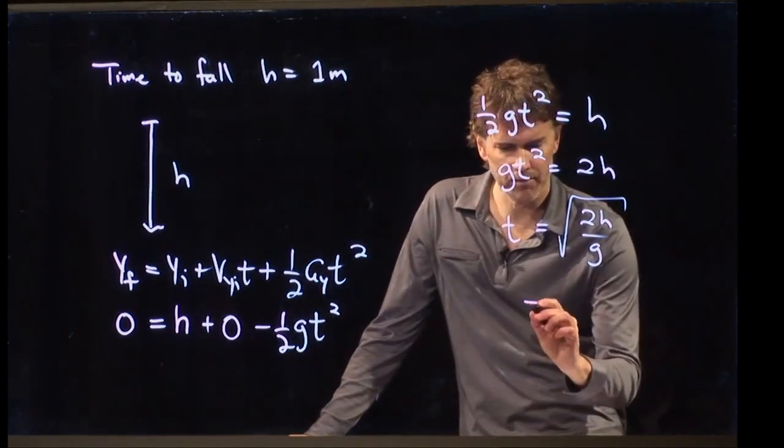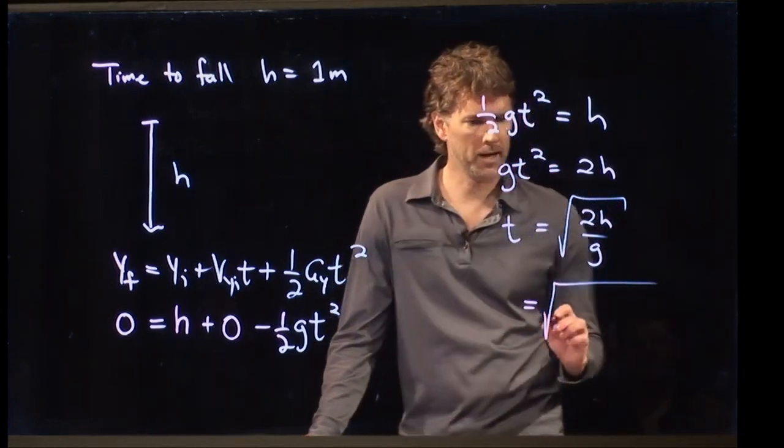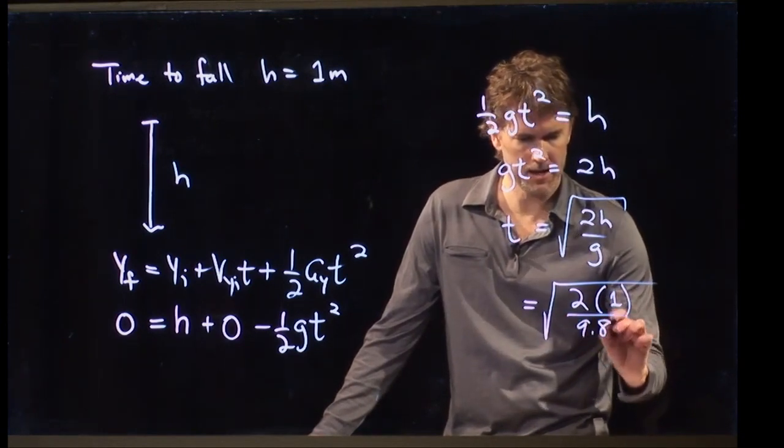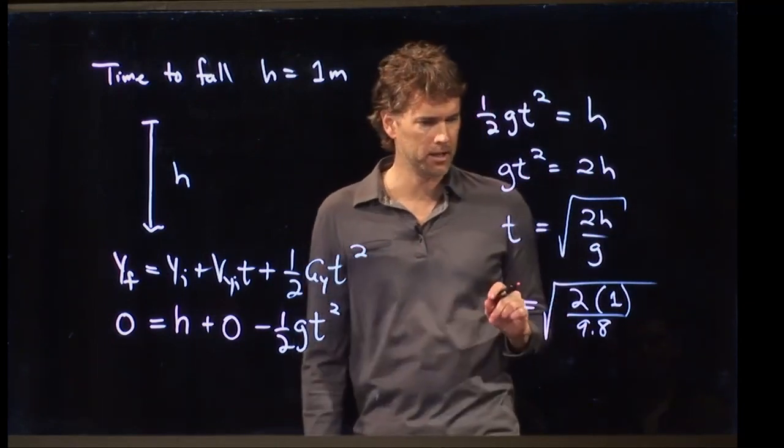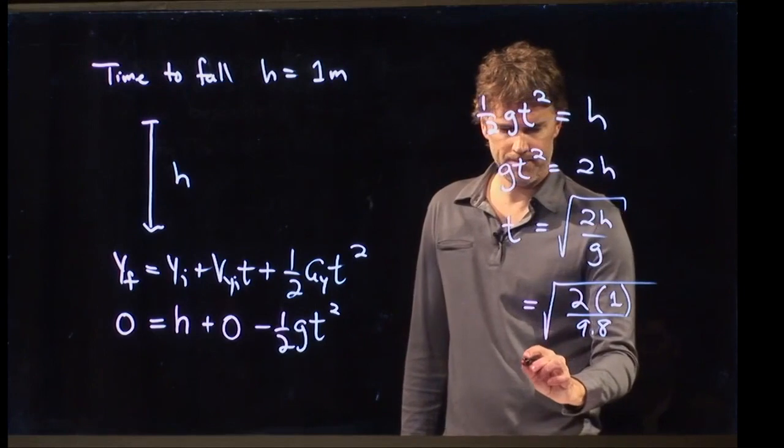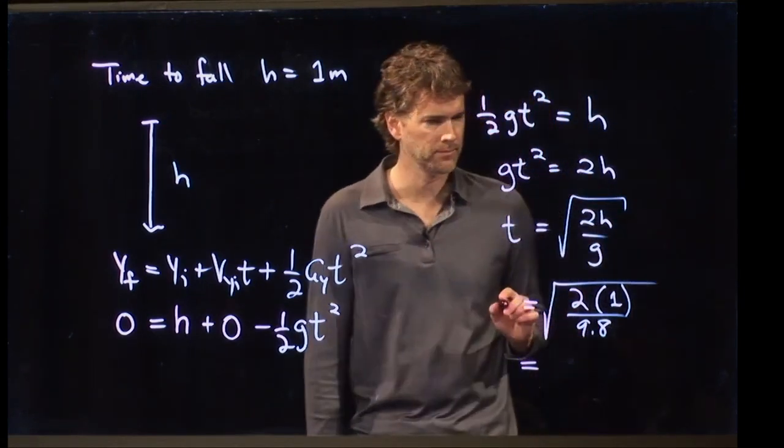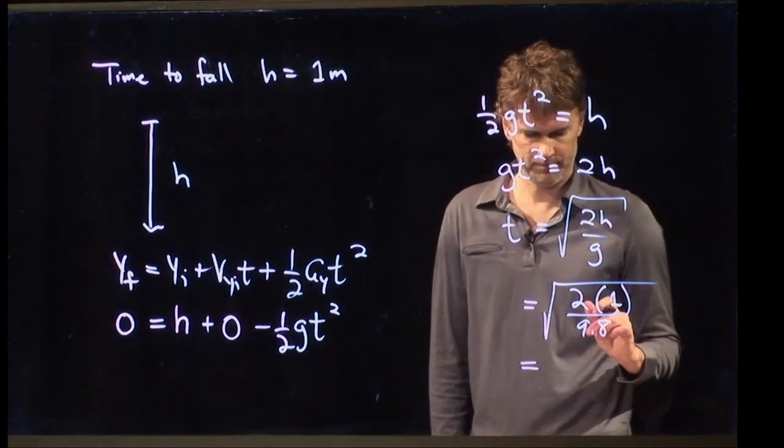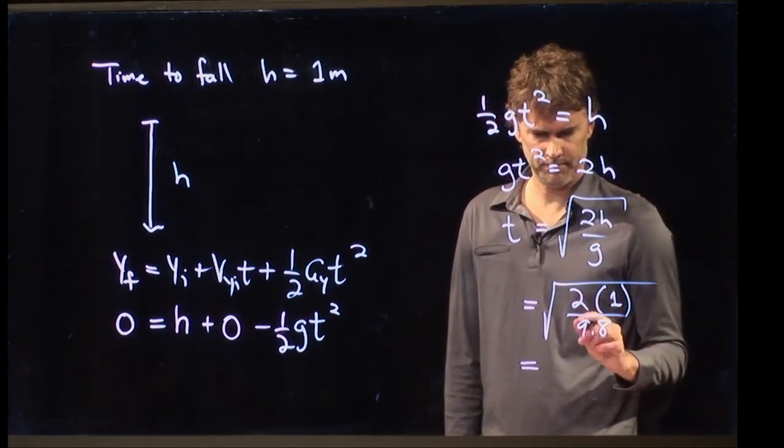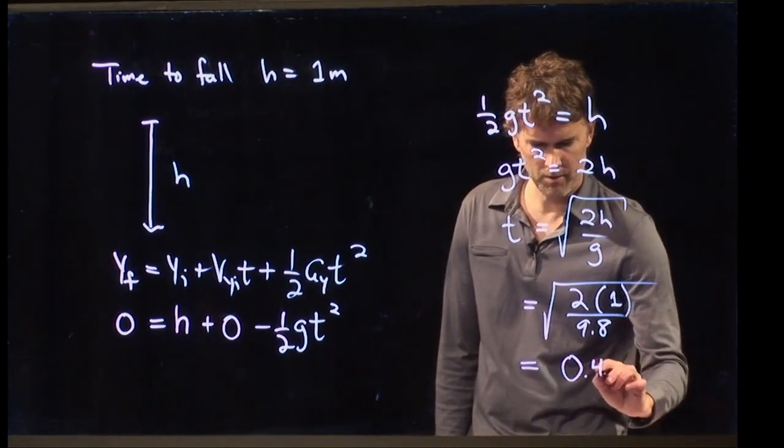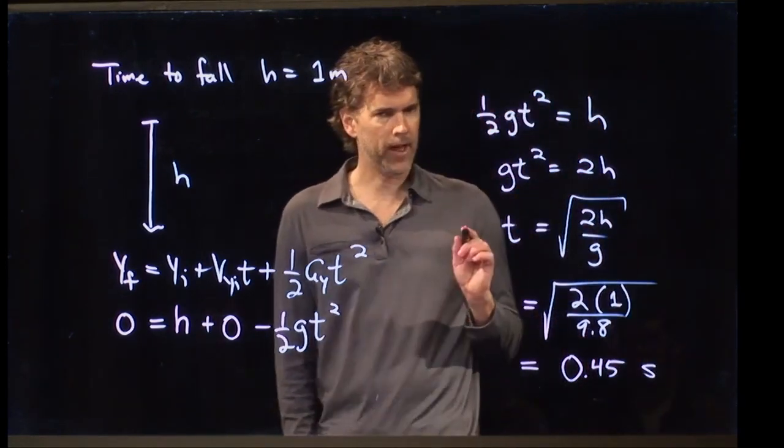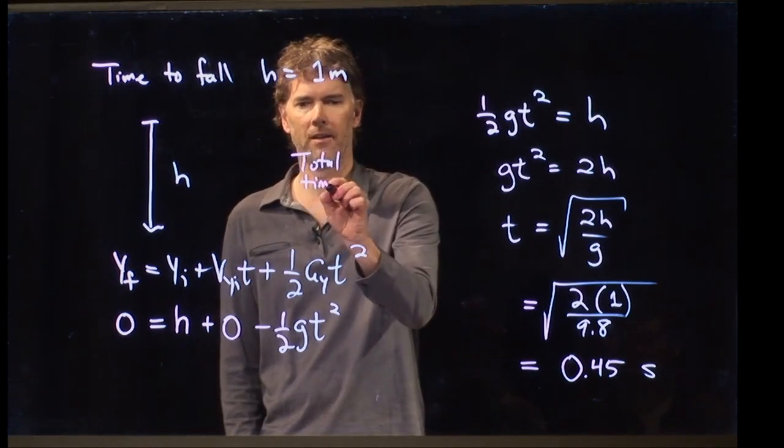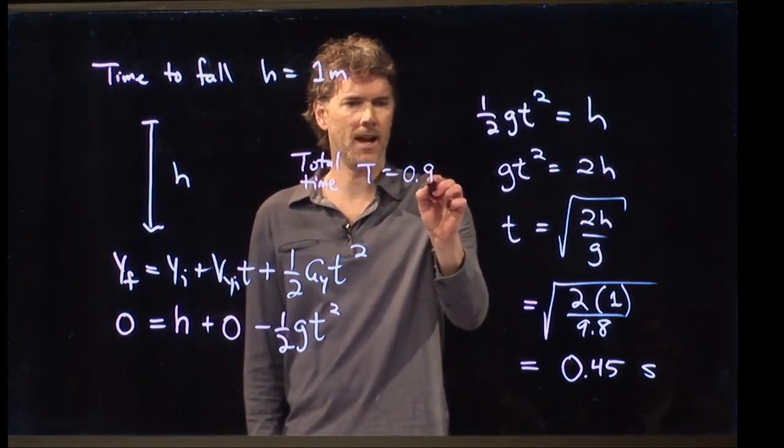So, we can plug in these numbers. If we do that, what do we get? We get 2 times 1 meter divided by 9.8. Somebody punch into your calculator those numbers and tell me what you get for your answer. 0.45 seconds. That is the time to fall. And so, the total time is, of course, just twice that, which is 0.9 seconds.